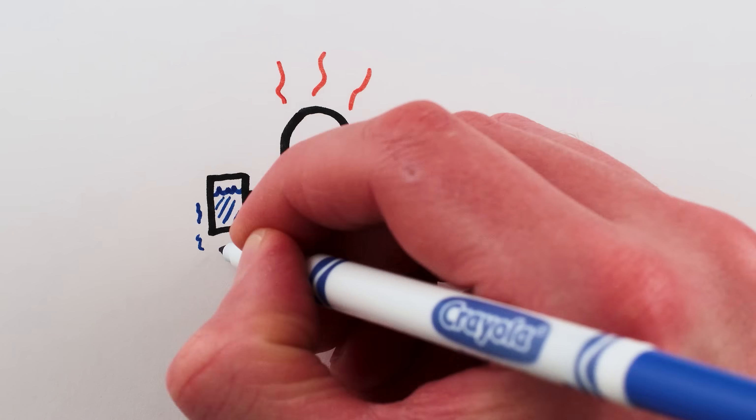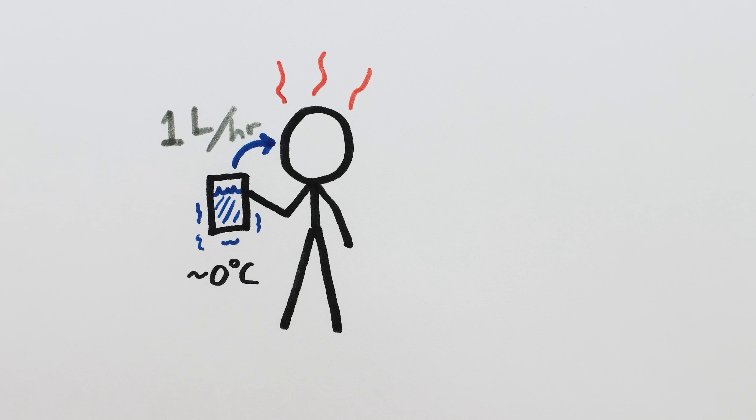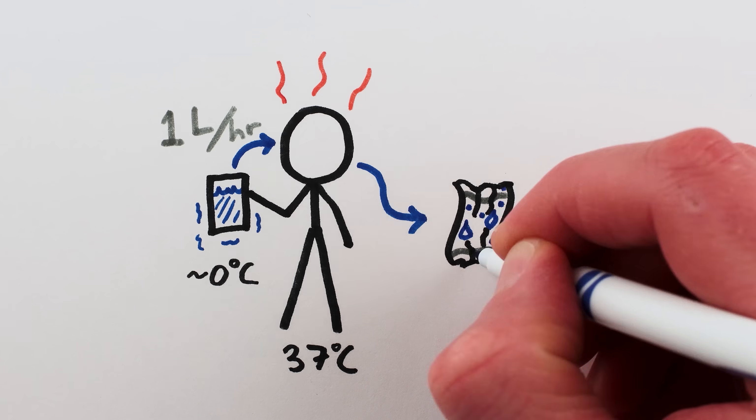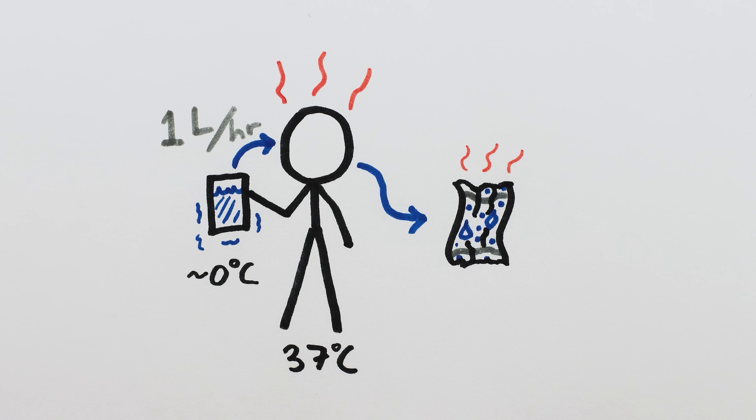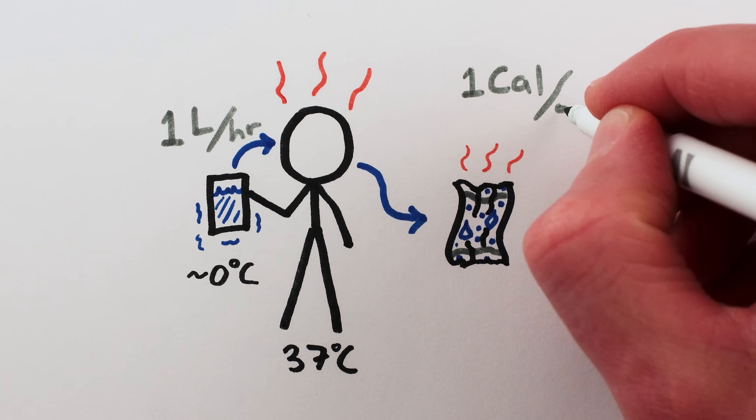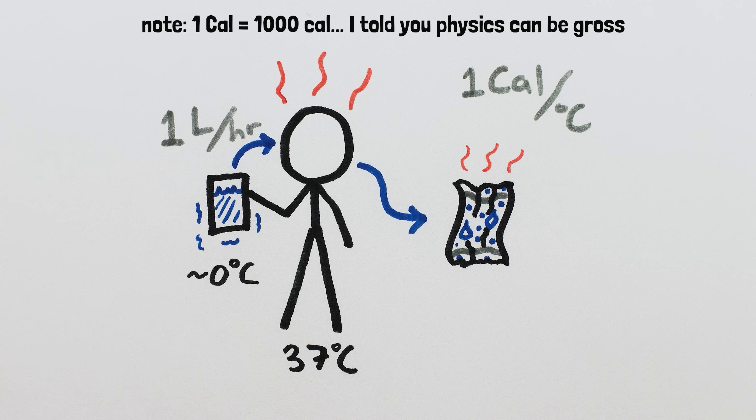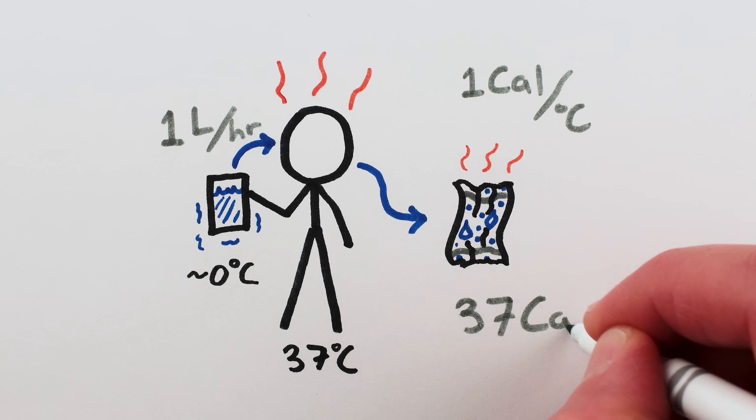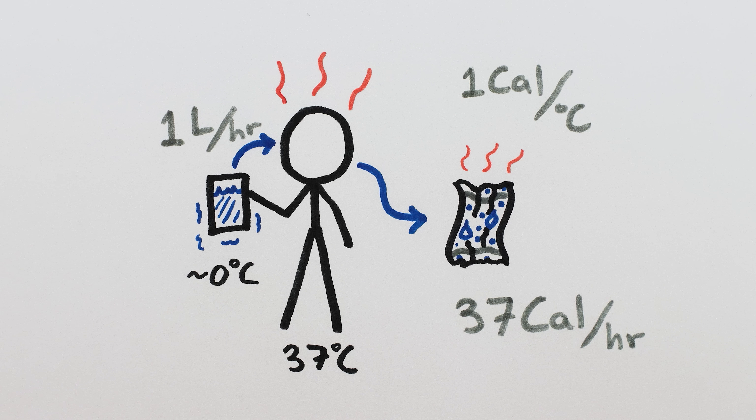For a human being, this would mean drinking, say, a liter of freezing cold water every hour, letting your body heat the water up to body temperature, and then removing it from your body by urinating or sweating and then wiping off the sweat. A liter of water can move one calorie of heat per degree celsius it heats up, so using water for liquid cooling can remove at most around 37 calories of heat every hour, one calorie for every degree celsius between freezing and body temperature.